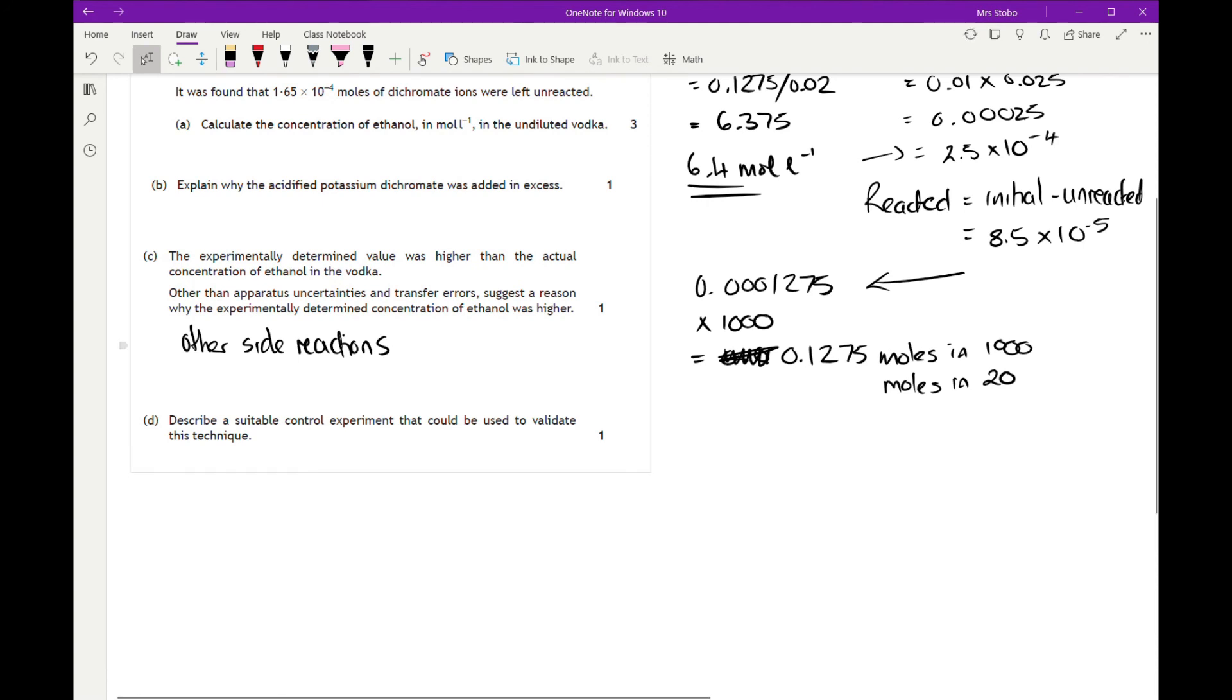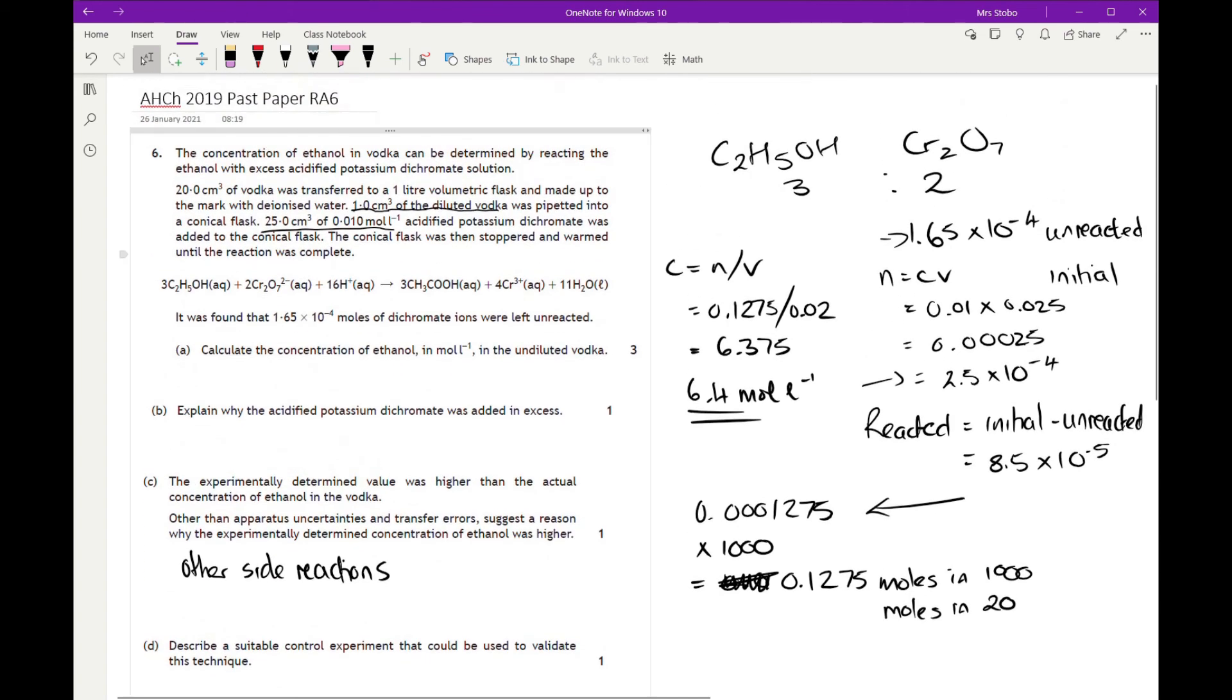A suitable control that could be used to validate this—well, a control would be to use a known pure ethanol. If you had pure ethanol set at a specific concentration, you could test against that, and that would give you a good reference point.